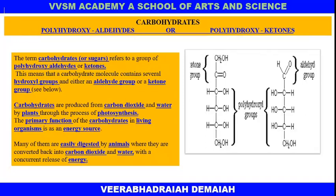Carbohydrates are produced from carbon dioxide and water by plants through the process of photosynthesis. The primary function of carbohydrates in living organisms is as an energy source. Many of them are easily digested by animals, where they are converted back into carbon dioxide and water with a concurrent release of energy.